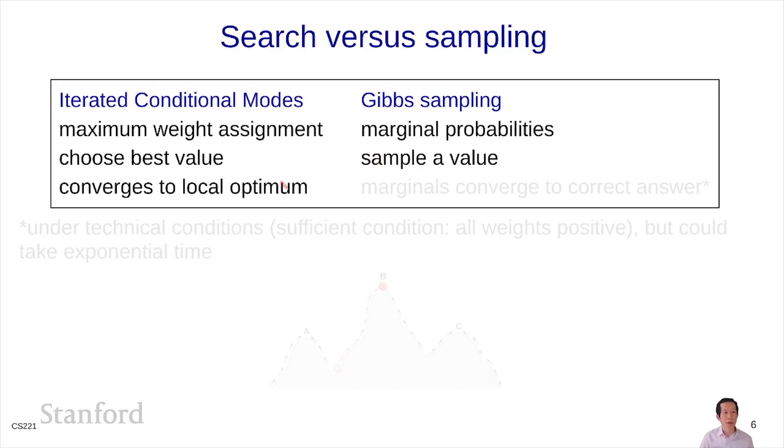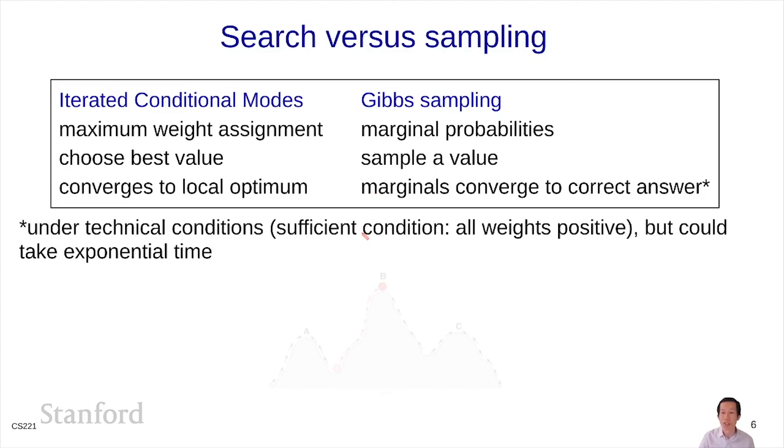In ICM, we notice that the algorithm does converge, but often to a local optimum, which is not the best maximum weight assignment. For Gibbs sampling, as you can see from these samples, there's no traditional notion of convergence. The samples are going to keep on changing. So the iterates are not the ones which are converging. What is actually going to converge are the marginal estimates. Under some technical assumptions, these estimates are actually going to converge to the correct answer. We saw that for object tracking. It did a pretty good job there. But there are some technical conditions. One sufficient condition is that all the weights be positive. But more generally, what we need is that the probability of going from one assignment to another assignment via Gibbs sampling has positive probability. Because if you have two disconnected regions, if you start Gibbs sampling at one particular point, then you will never reach the other point.